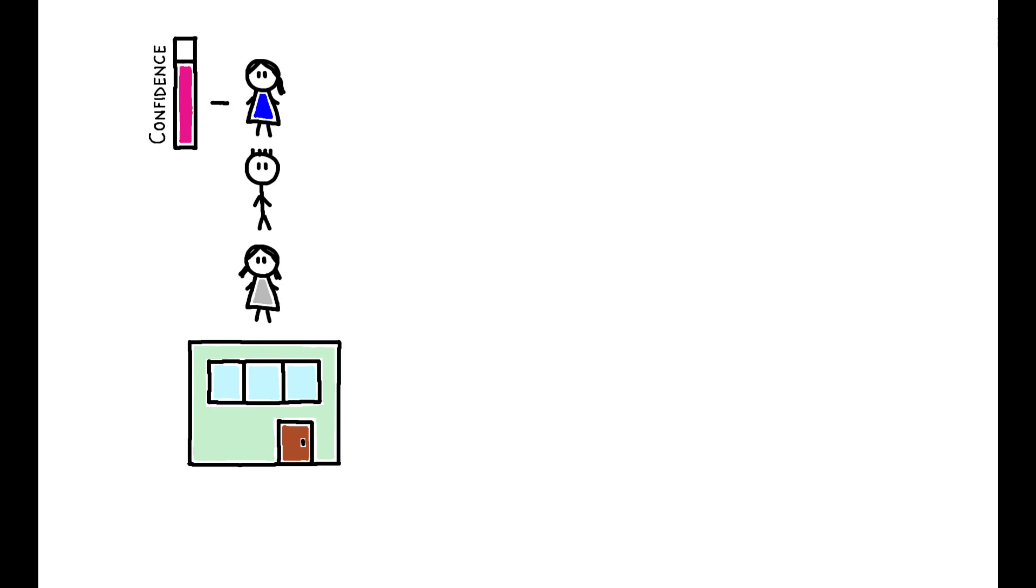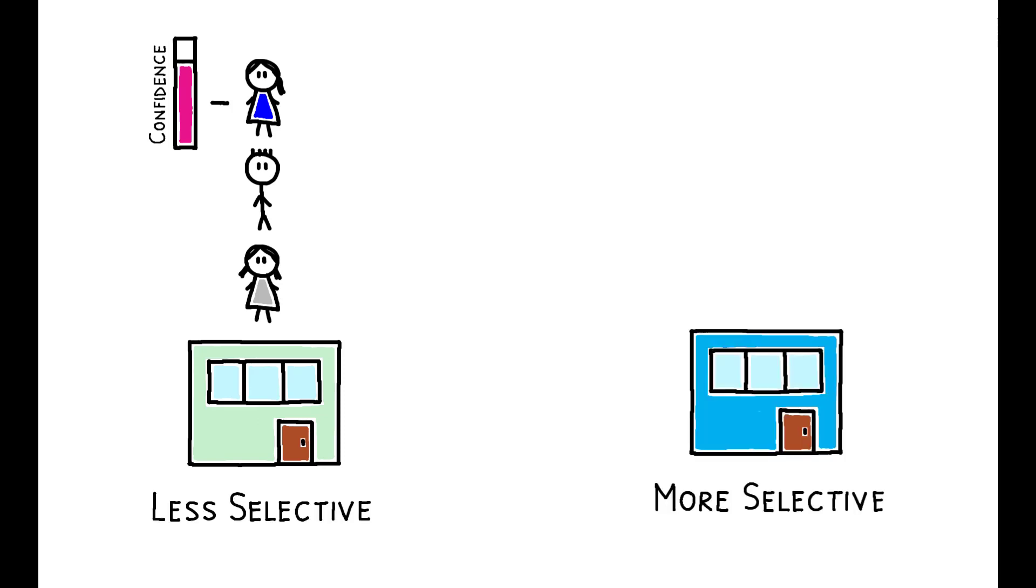But it helps explain why many papers have found minimal benefits on the margin from attending selective schools. The potential benefits of these institutions may be lessened if students are placed in a peer group where they have a lower rank and, therefore, lower confidence.